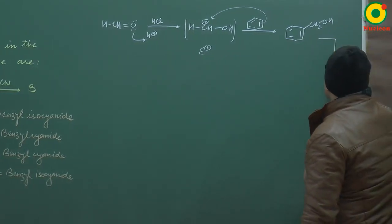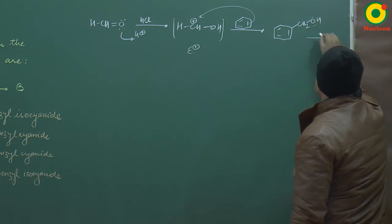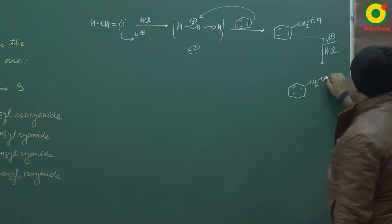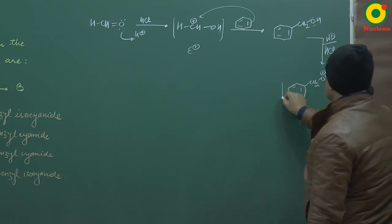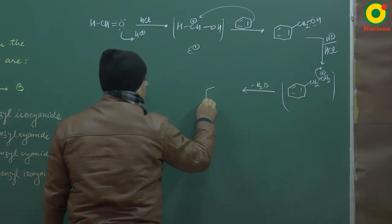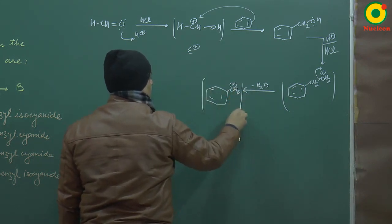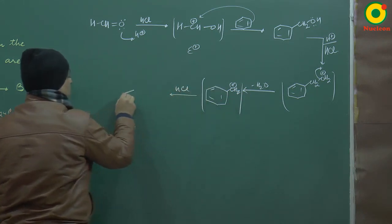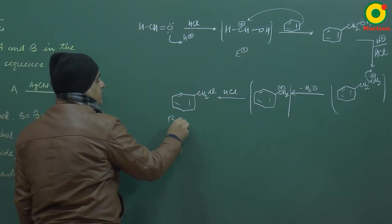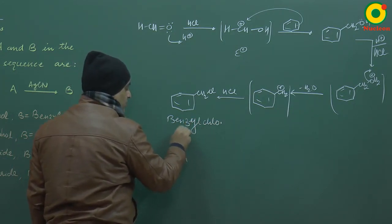लेकिन HCl की presence में benzyl alcohol भी stable नहीं होगा। फिर से protonation हो जाएगा। H+ के protonation से ये बन जाएगा CH2OH2+। OH2+ is a good leaving group, तो H2O के निकल जाने से ये बन जाएगा CH2+। HCl की presence में chloro आ जाएगा, यानि CH2Cl - यह है benzyl chloride। यह हमारा compound A है।